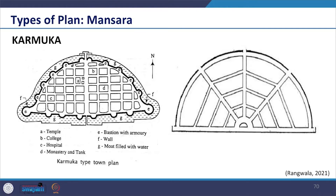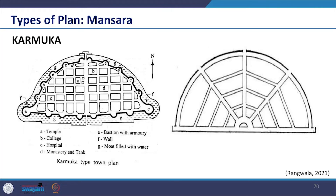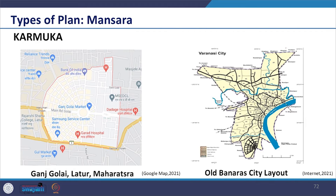Next we see the Karmukha plan, which is said to be suitable for places where the site of the town was in the form of a bow or a semi-circular or parabolic shape. This plan was mostly applied for towns located on the seashore or river banks. We can see that Old Banaras situated at the bank of river Ganga is based on this plan. The main streets of the town run from north to south or east to west, and cross streets run at right angles to them dividing the whole area into blocks. We find Ganjgolai Latur in Maharashtra and Old Banaras city layout built on the principles of Karmukha.